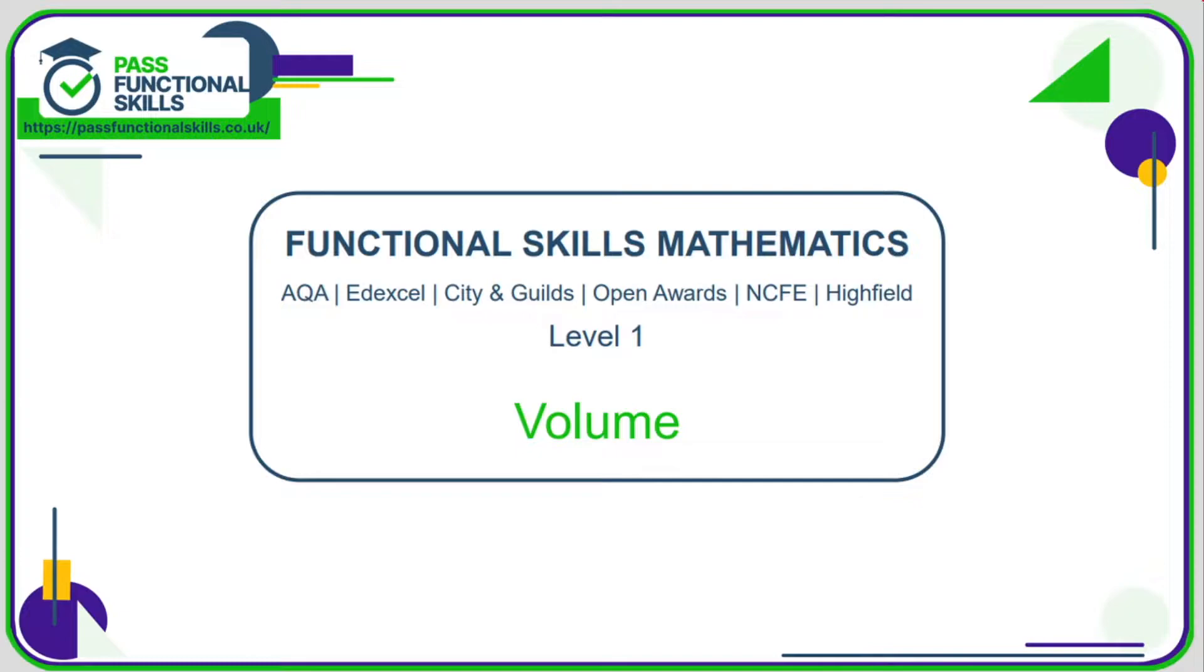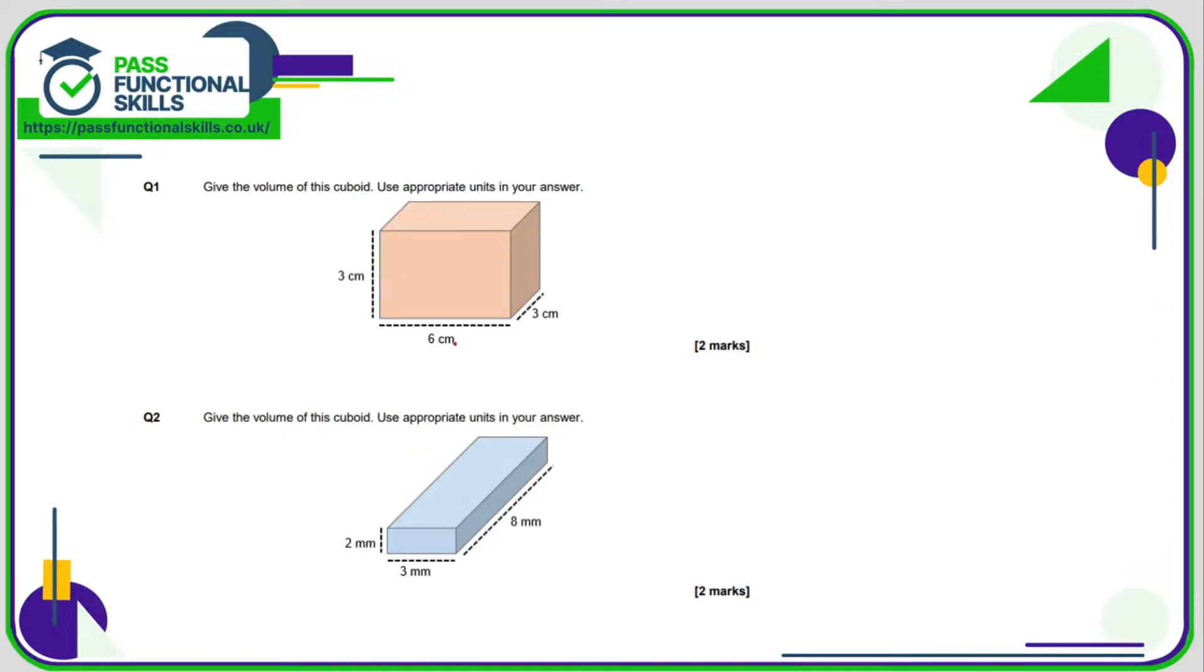Let's take a look at volume questions now. All of these are calculator questions if you want to use a calculator. Number one, what is the volume of the cuboid? Well, if it's 3 by 6 by 3, all you need to do is multiply these dimensions together, and 3 times 6 times 3 is 54 cubic centimeters.